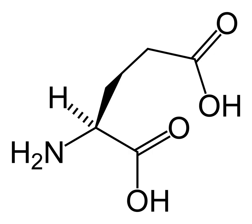Glutamate receptors are synaptic and non-synaptic receptors located primarily on the membranes of neuronal and glial cells. Glutamate, the conjugate base of glutamic acid, is abundant in the human body, but particularly in the nervous system and especially prominent in the human brain where it is the body's most prominent neurotransmitter, the brain's main excitatory neurotransmitter, and also the precursor for GABA, the brain's main inhibitory neurotransmitter.